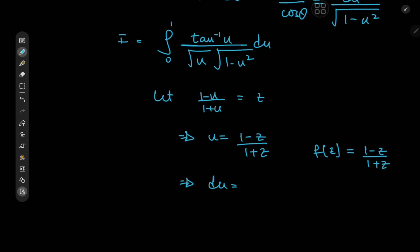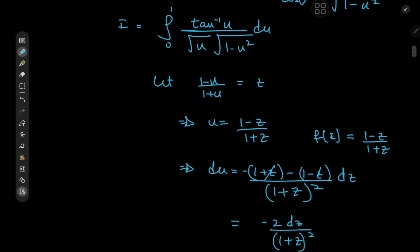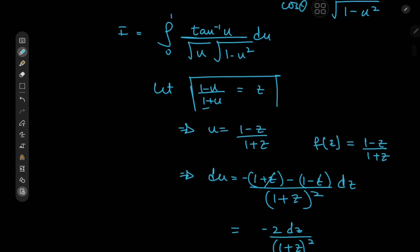Differentiating, we have du equal to — let's see — we get 1 plus z times negative 1, minus 1 minus z times 1, all over 1 plus z squared in the denominator. After simplifications, those two terms cancel out, so we get negative 2 dz divided by 1 plus z squared. Another benefit of this transformation is that it maps the interval from 0 to 1 onto the interval from 0 to 1 — we can verify the limits are still 0 and 1, however they are switched, so we now have the interval from 1 to 0.